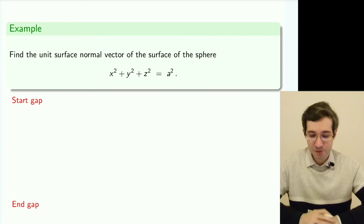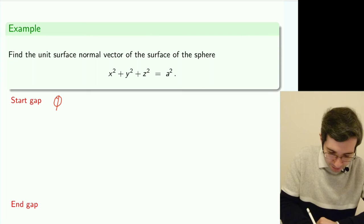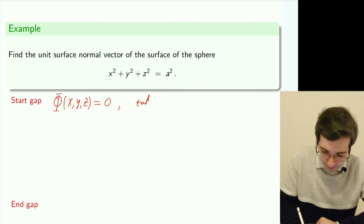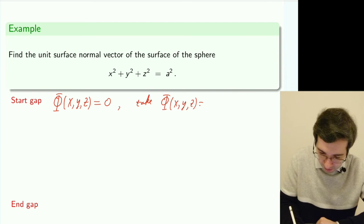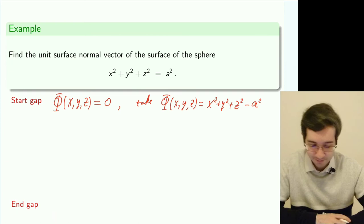Let's find a unit normal to our traditional surface, which is a sphere of radius a. So to do it, we use a definition. We say that first we want to have an implicit form Φ(x, y, z) equals zero.